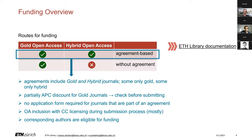Generally speaking, there are two main routes for open access funding: the gold and the hybrid route. Our agreements include gold and hybrid journals. Please note there are some agreements that only include hybrid journals and some only gold. Partially, hybrid journals are completely included and for gold journals only a discounted APC applies. If you follow the link on the right-hand side to our documentation website, you will find comprehensive information about each agreement to avoid confusion.